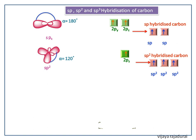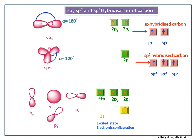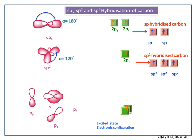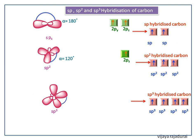Next we see SP3 hybridization. In the excited state the electron moves on to 2Pz orbital. Then 2S, 2Px, 2Py, and 2Pz orbitals hybridize together to give four new SP3 hybridized orbitals. The angle between two SP3 hybridized orbitals is 109.5 degrees.